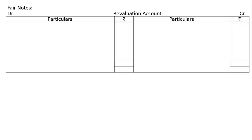Now the revaluation account. First item is stock — increase in asset, Rs 2,000. Next is creditors, Rs 800. Part D: creditors include a contingent liability of Rs 4,000 which the court decided at Rs 3,200. We had included Rs 4,000 in creditors for the contingent liability, but the court decided Rs 3,200. Hence, decrease in creditors is Rs 800 — a gain of Rs 800. We were supposed to pay Rs 4,000 but the court said Rs 3,200, so Rs 800 is the gain.